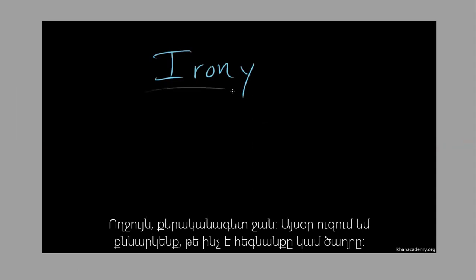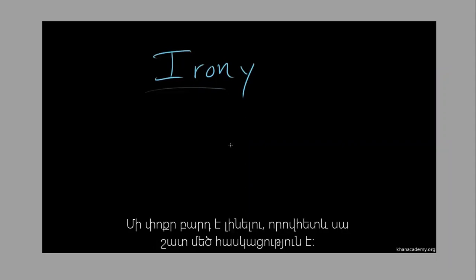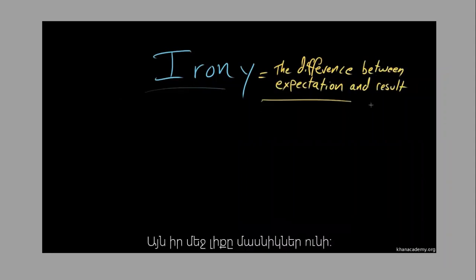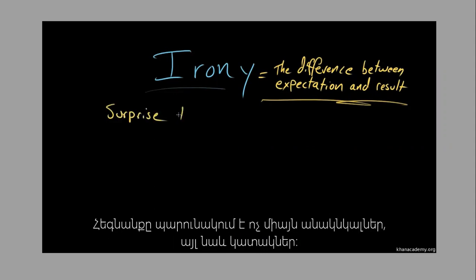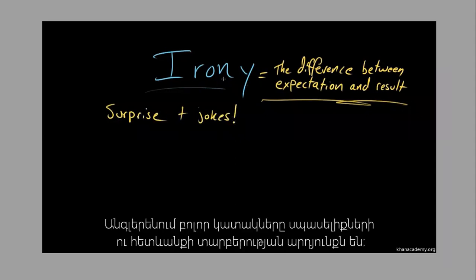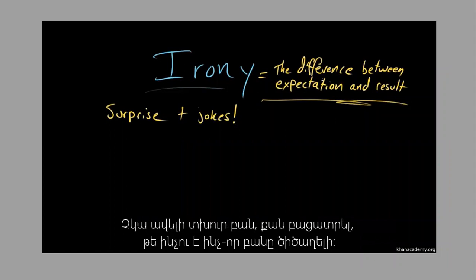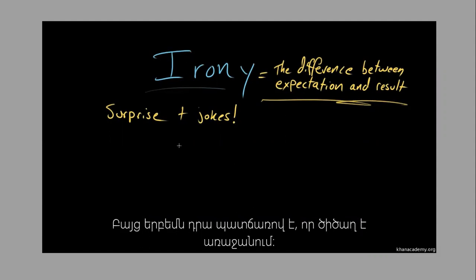Let's watch this video explaining irony and the three types, by Khan Academy. Irony is a very difficult concept to nail down because it means so many things. The best definition is that irony is the difference between expectation and result. This means irony is not only the engine of surprise, but also jokes. All jokes in English function on the engine of the difference between expectation and result — you expect to hear one thing, and then the joke plays with your expectation.